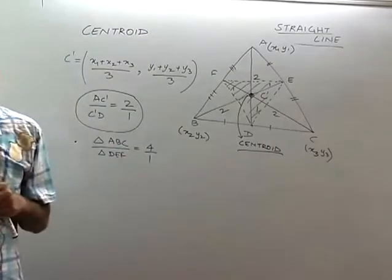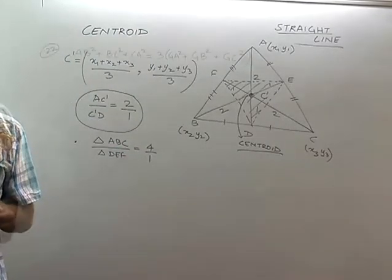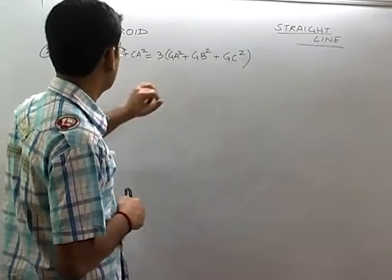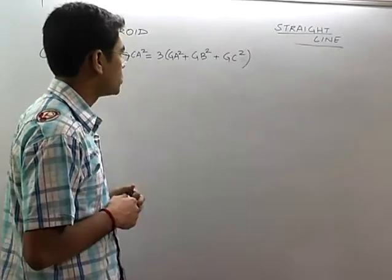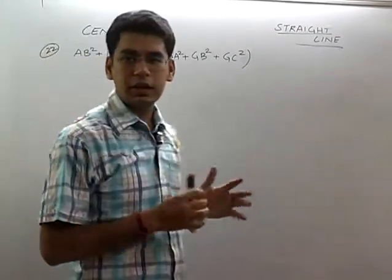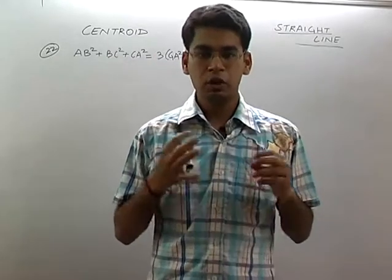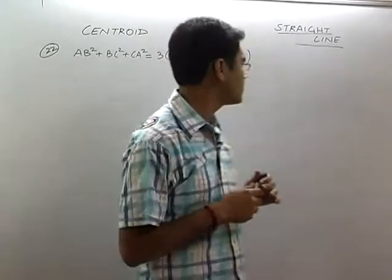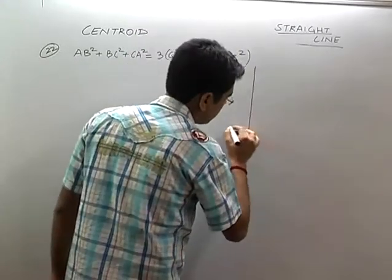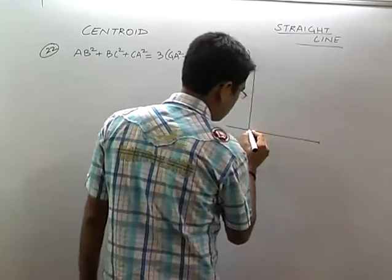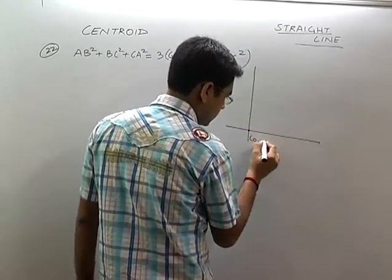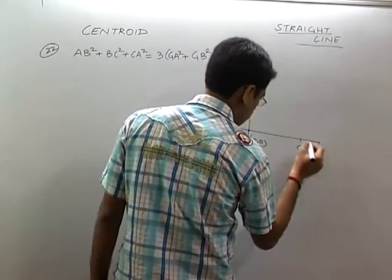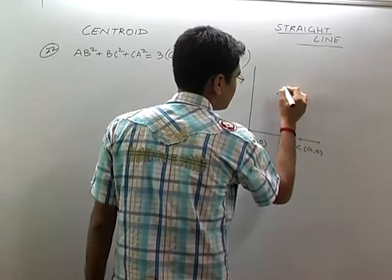Let us do some questions to understand what is centroid. Now let us do illustration 22 from your package, which states: G is the centroid and you have to prove a given equation. We have triangle ABC and we don't know where it is, so we will choose our convenient coordinates. I choose B at the origin, C at (a, 0), and the third point A at (h, k).